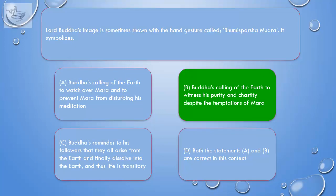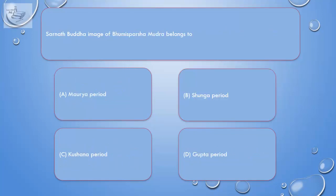Buddha's calling of the earth to witness his purity and chastity despite the temptations of Mara. Question. Sarnath Buddha image of Bhoomisparsha Mudra belongs to — A. Maurya period. B. Shunga period. C. Kushana period. D. Gupta period.